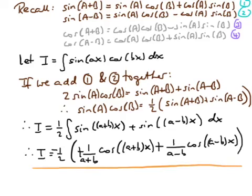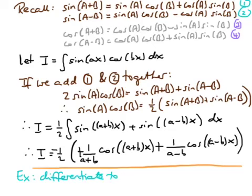You can verify this expression by differentiation — differentiate, obtain sines, then rewrite using equations 1 and 2, and everything will cancel returning you to your original integrand. I'll leave that for you as an exercise. Essentially, all you'll be doing is going backwards: differentiate, obtain the equations, and go back using equations 1 and 2.